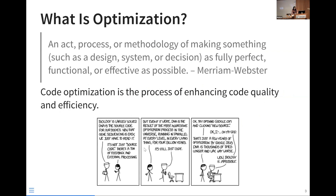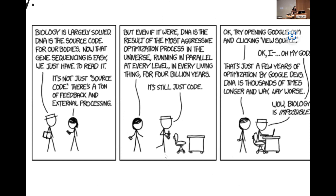I really wanted to include this little comic strip — first of all because it deals with optimization, and also because it's biology related and we are at the Hutch. Essentially, we have a figure in the white hat saying that biology is largely soft and DNA is source code to our bodies. The other figure disagrees, saying it's the most aggressive optimization process in the universe, comparing it to Google's source code to illustrate how complex DNA actually is. You can compare our bodies to computers, and the beauty of source code is that you can better understand it and make the enhancements needed.